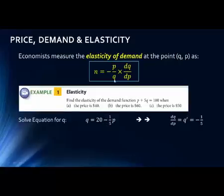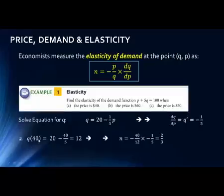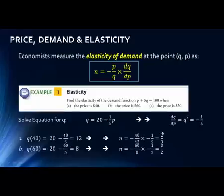Now we need the price and the quantity for each case. We have the price given and we can find the quantity by plugging into our equation. For p equals 40, we get q equals 12. For p equals 60, we get q equals 8. We then plug all those values into the elasticity formula: elasticity equals negative p over q times dq/dp. For p equals 40, we get an elasticity of two-thirds. For p equals 60, we get an elasticity of three-halves.